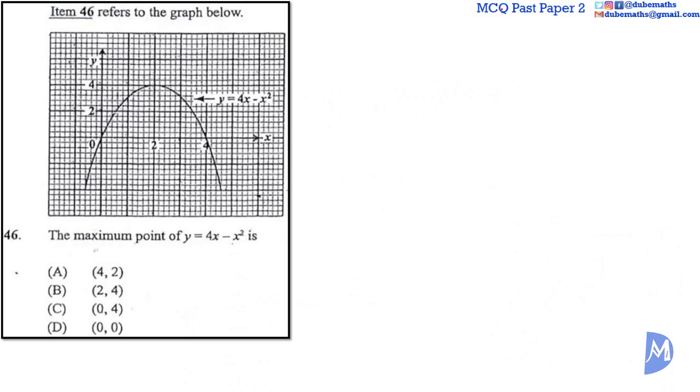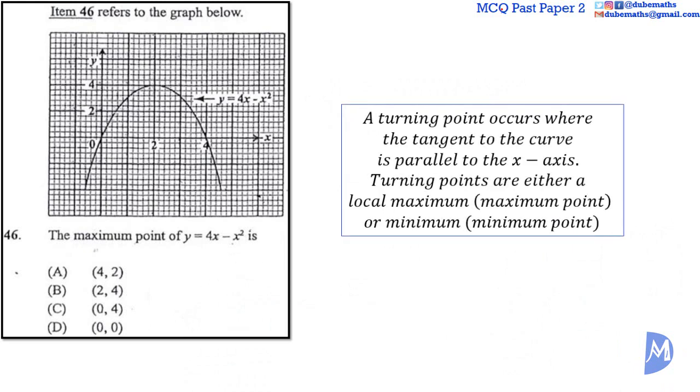Question 46. The maximum point can be read off the graph. Turning points occur where the tangent to the curve is parallel to the X-axis. This is the maximum point. The coordinates are 2, 4. The answer is B.